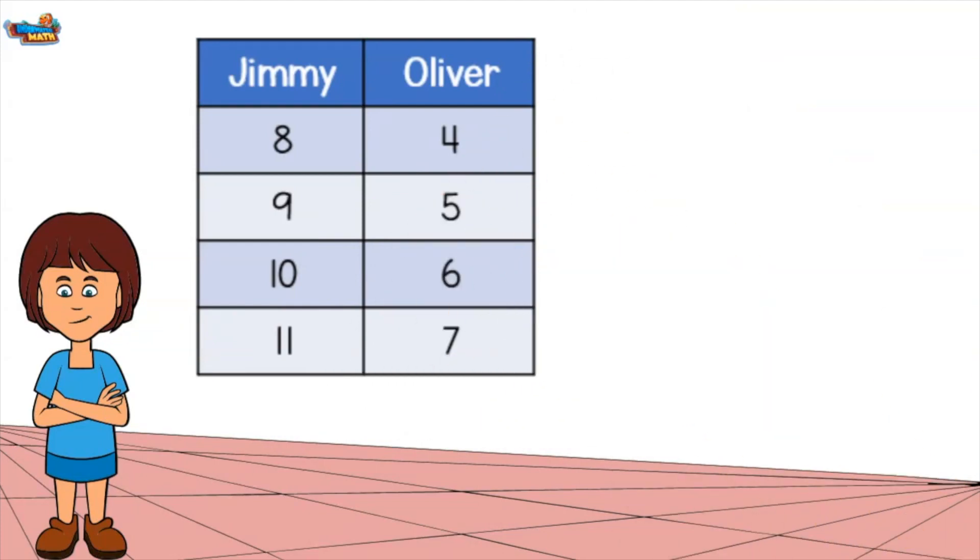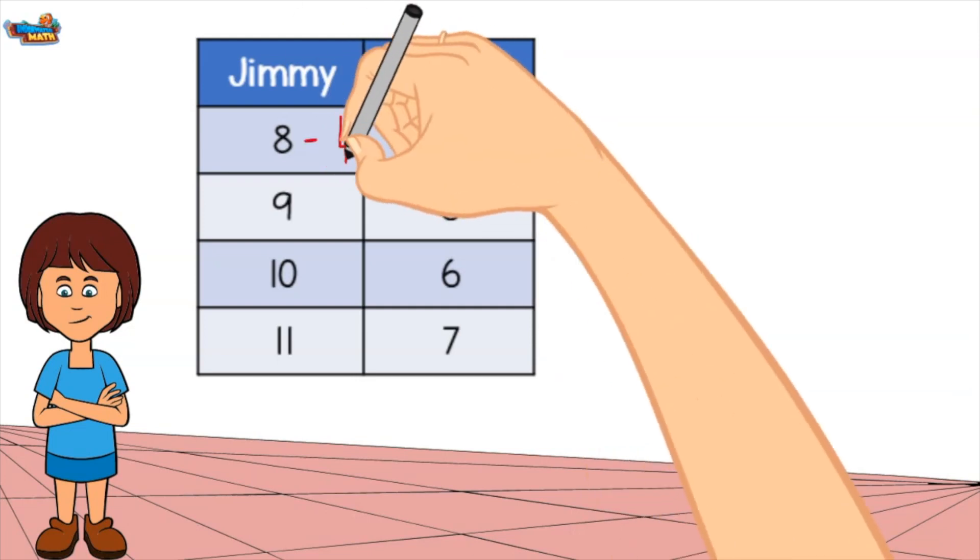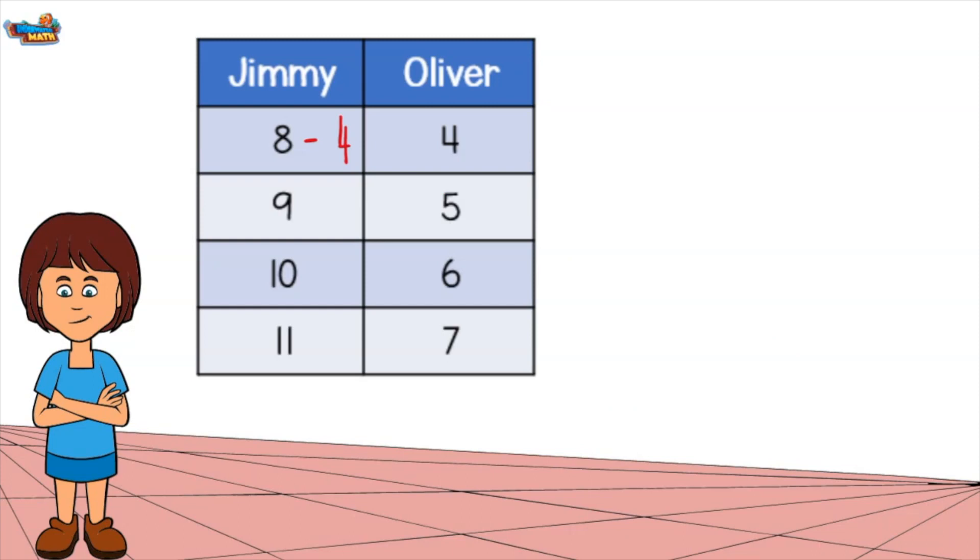First, we start by determining the rule. I want to determine how many years older Jimmy is than Oliver. To find the difference, I subtract 8 and 4. Jimmy is 4 years older, but let's check our work with the next row. 9 minus 4 equals 5. Yes, this works. Our rule is minus 4.